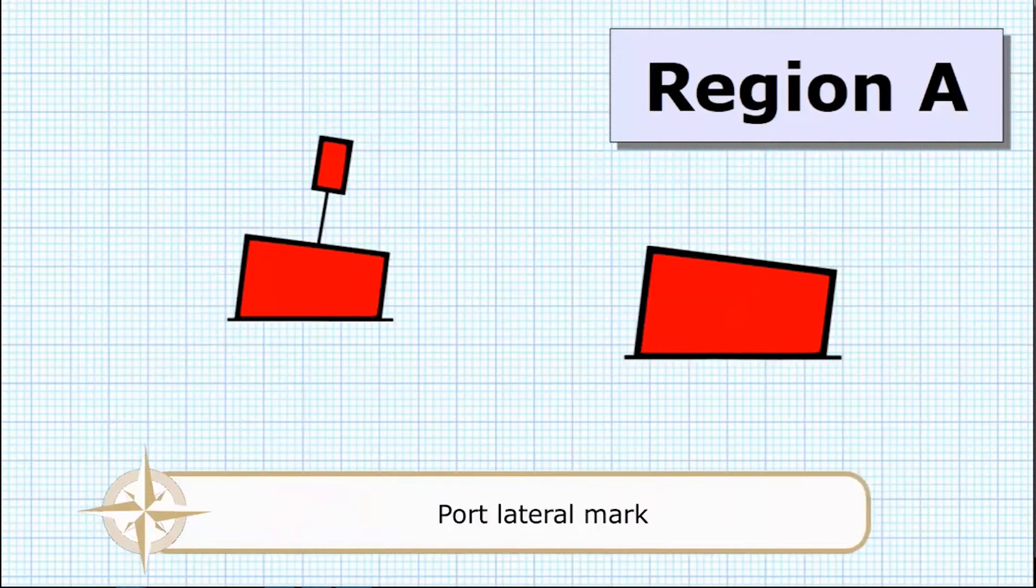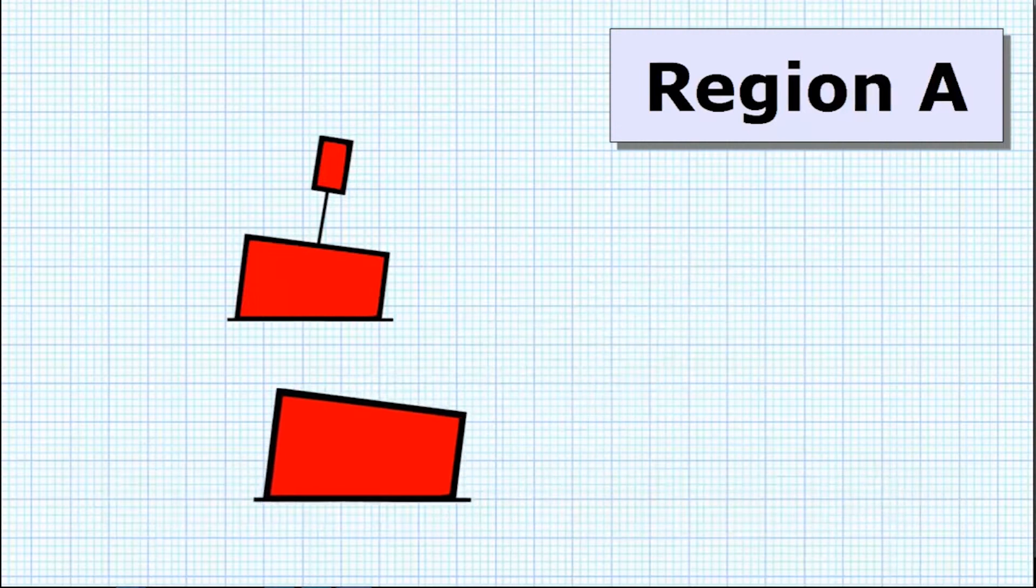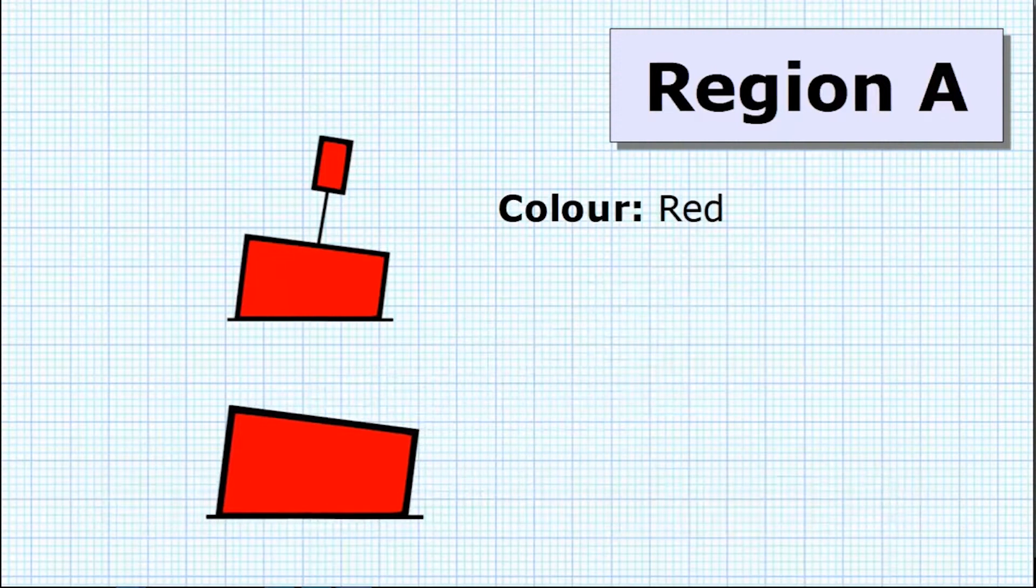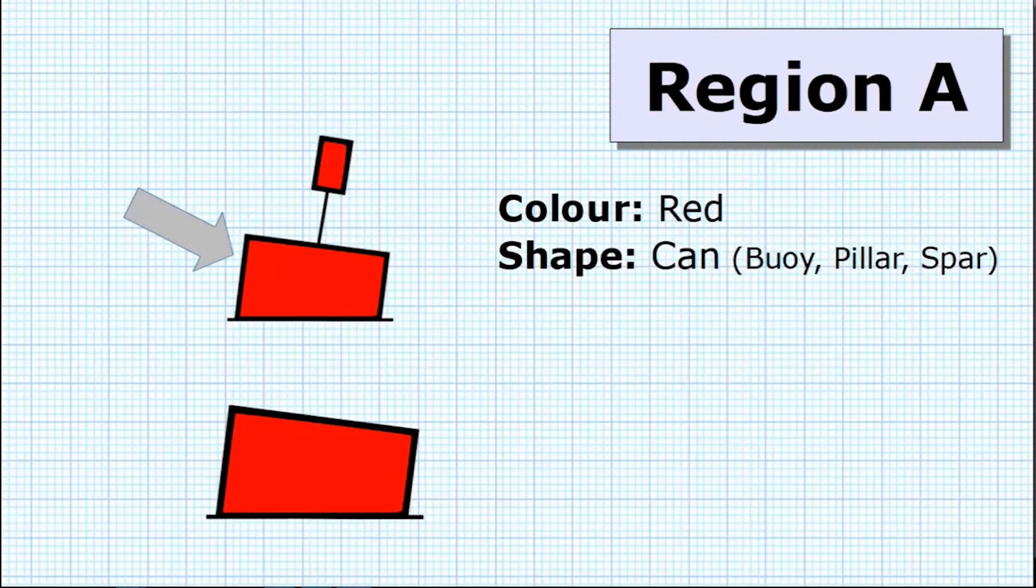To look at the buoys in a little bit more detail, we're going to start off with the port lateral mark in Region A. For each of these, we're just going to look at all the different characteristics. First off, its color. Well, obviously it's red. If we look at the main part of the buoy, we get an indication of shape, which is going to be a can shape.